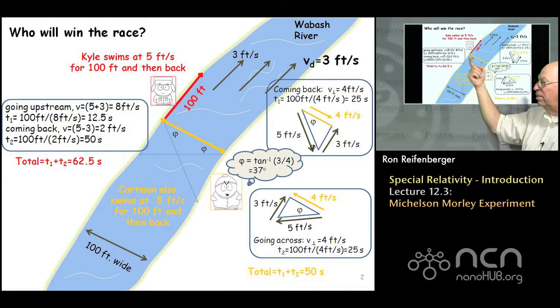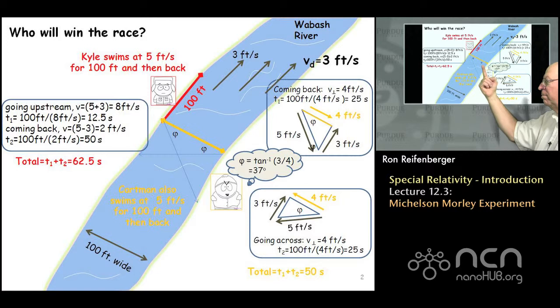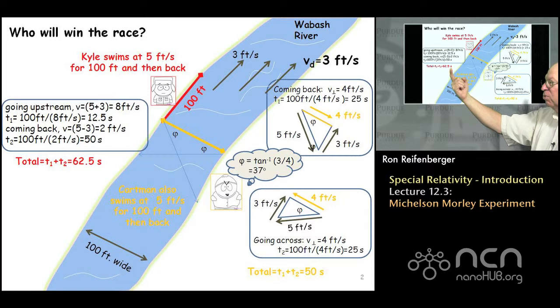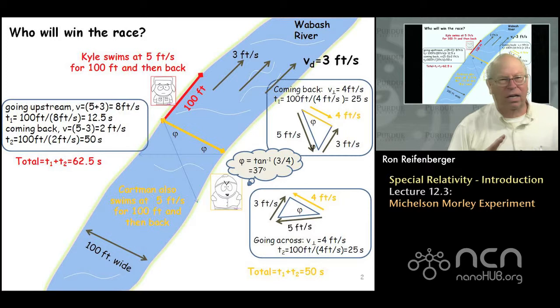Working out the arithmetic, it turns out that his speed across the river and back are going to be exactly the same, at 25 seconds each way, giving a total transit time of 50 seconds. So he is going to swim the same distance as the red swimmer, but he's going to do it in about 12 and a half seconds less. This is the key result.